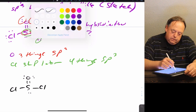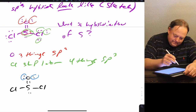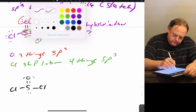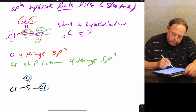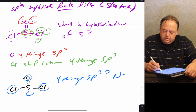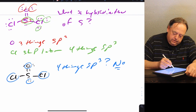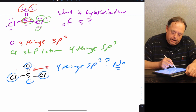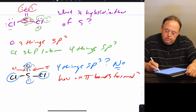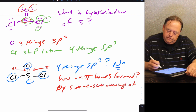Now what about the sulfur? What's attached to sulfur is one oxygen, three chlorines, and one lone pair — so you might say four things and guess sp3. But the answer is no. There's something extra to be aware of here: the sulfur-oxygen bond is a double bond, so one of those bonds is a pi bond and one is a sigma bond. How are pi bonds formed? By side-to-side overlap of p orbitals.